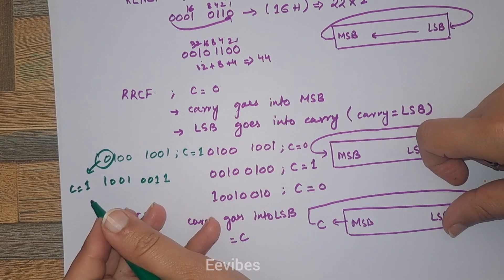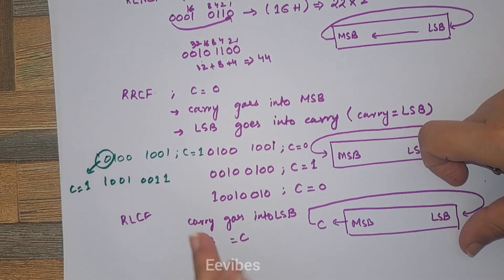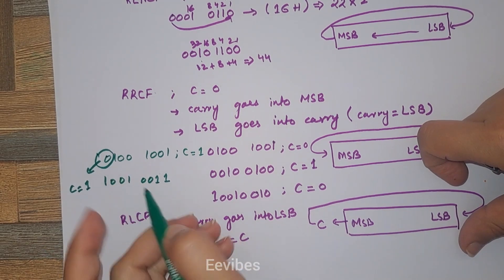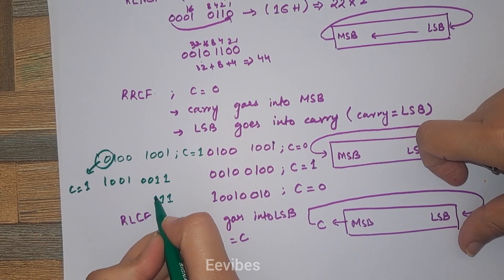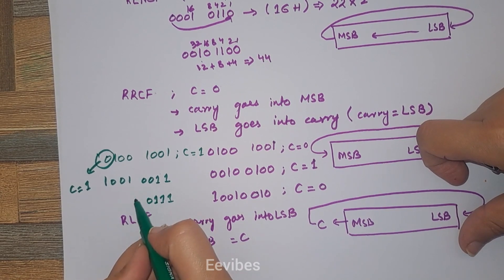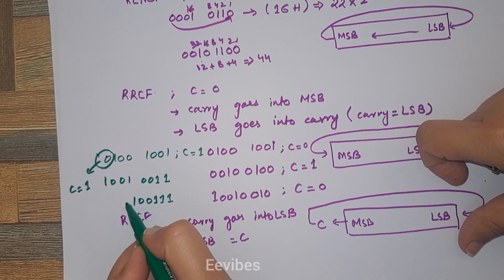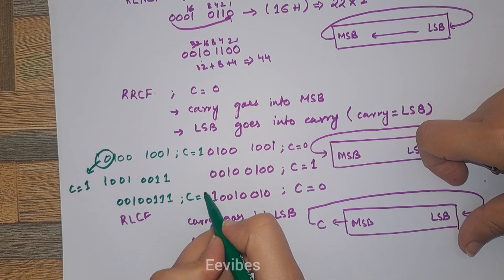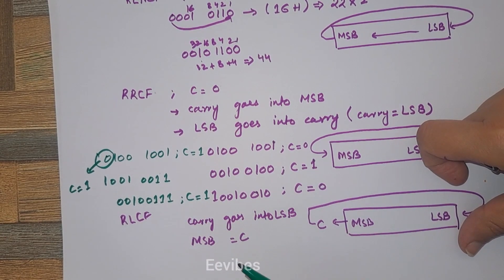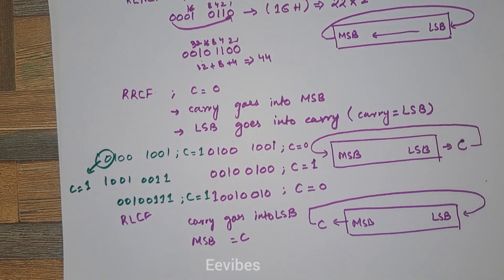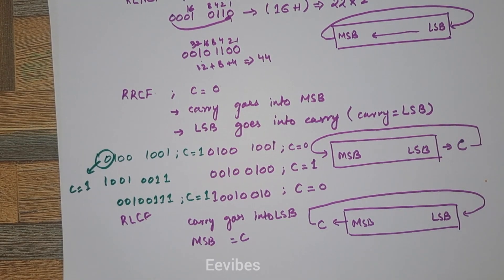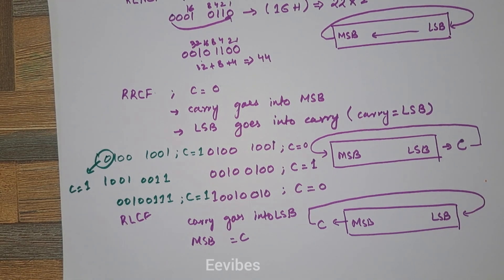Let's do one more rotation. Again carry goes into the LSB — 0 is placed here, then 1, 1, 0, 0, 1, 0, 0. Again carry will be equal to 1. In this way, all four rotate instructions are implemented in the PIC microcontroller. If you have any question, you can drop your questions in the comment section. Thank you for watching.